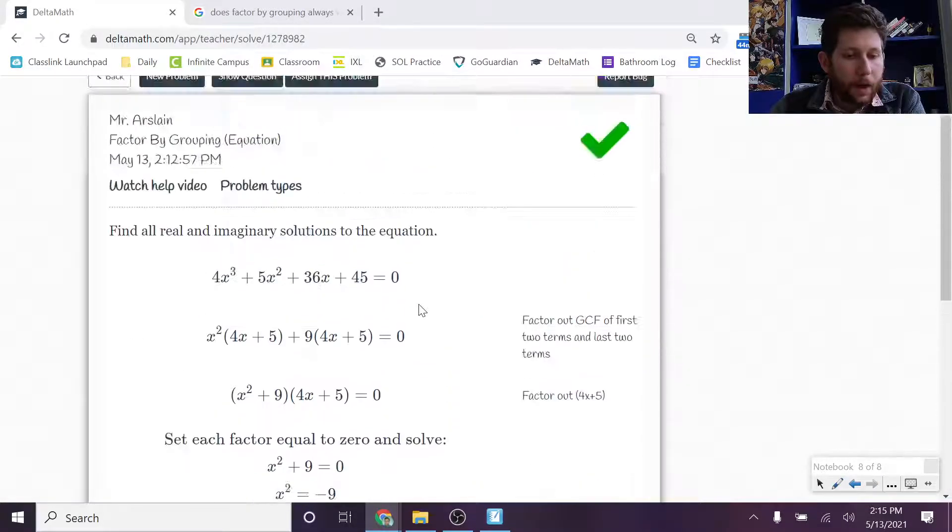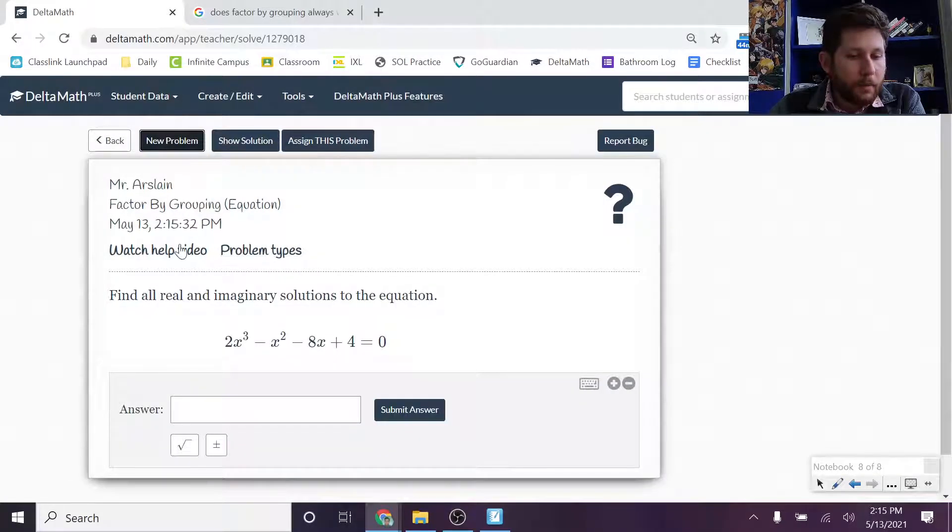And it walks you through. Again, you can always hit the show, you can always hit the problem or watch the help video. There's also a show solution button if you want to see how the solution works. So you can always check those things out. So you're going to use your factor by grouping. You factor out the first two terms, the last two terms, and then you go from there.